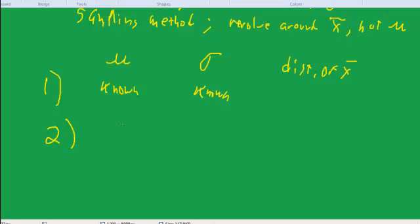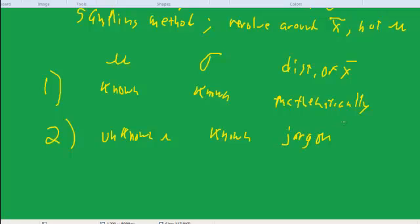And then next, for sort of jargon purposes, we're going to talk about an unknown μ and a known σ. This first stage is to sort of mathematically show the distribution of X-bar. The next stage is to introduce some jargon about confidence intervals and hypothesis tests.